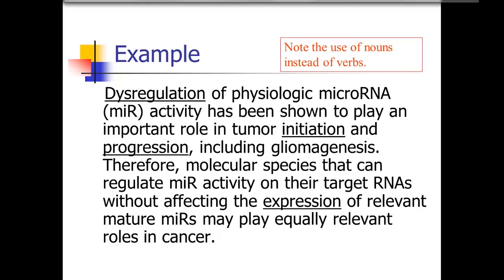First, as in the examples we saw earlier, there's the use of nouns rather than verbs. The authors use dysregulation, initiation, progression, and expression — those are all nouns that could have been verbs: dysregulate, initiate, progress, and express. Verbs really move the sentences along, whereas nouns slow the reader down.